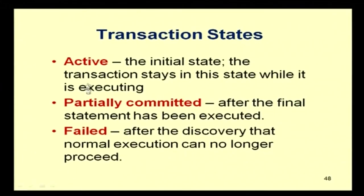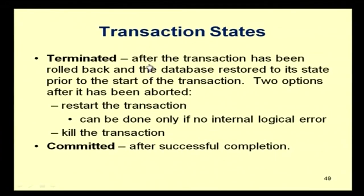Active is the initial state — the transaction stays in this state while it is executing. After the final statement has been executed, it goes to the partially committed state. After discovery that normal execution cannot proceed, it goes to the failed state. After the transaction has been rolled back and the database restored to its prior state, there are two options: restart the transaction or kill it. After successful completion it reaches the committed state.